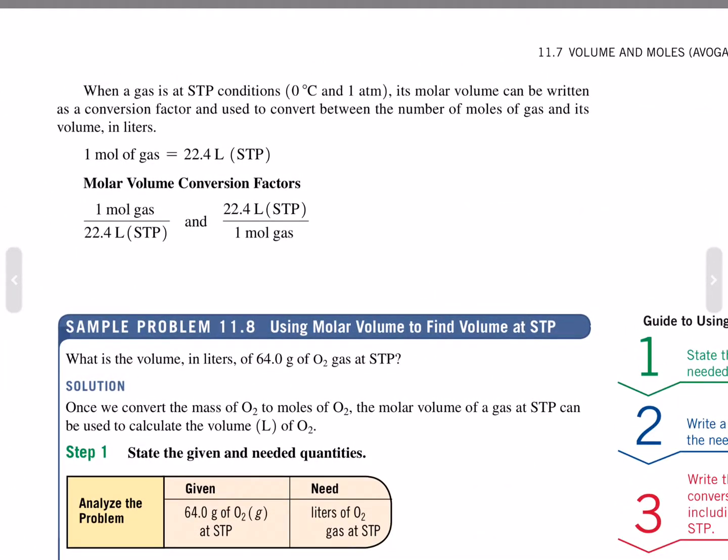When a gas is at STP conditions, 0 Celsius and 1 atmosphere, its molar volume can be written as a conversion factor and used to convert between the number of moles of gas and its volume in liters. 1 mole of gas is equal to 22.4 liters at STP. The molar volume conversion factors is 1 mole of gas per 22.4 liters at STP and 22.4 liters at STP per 1 mole of gas.